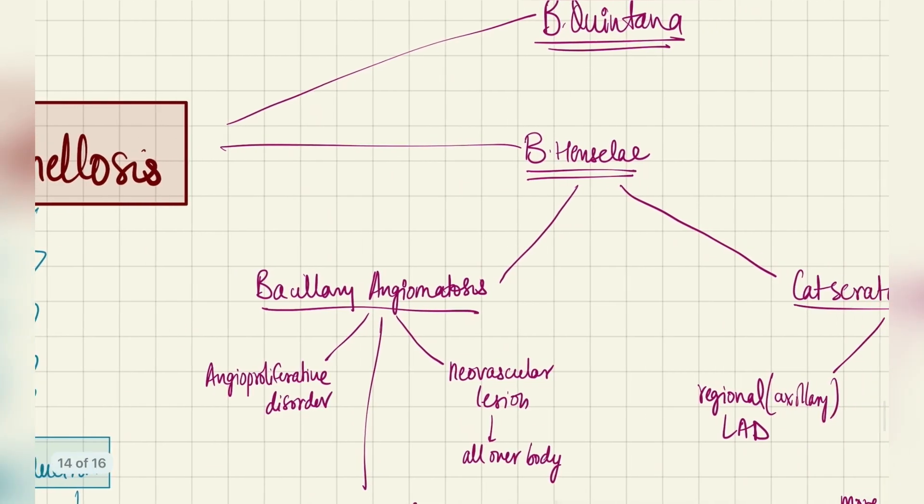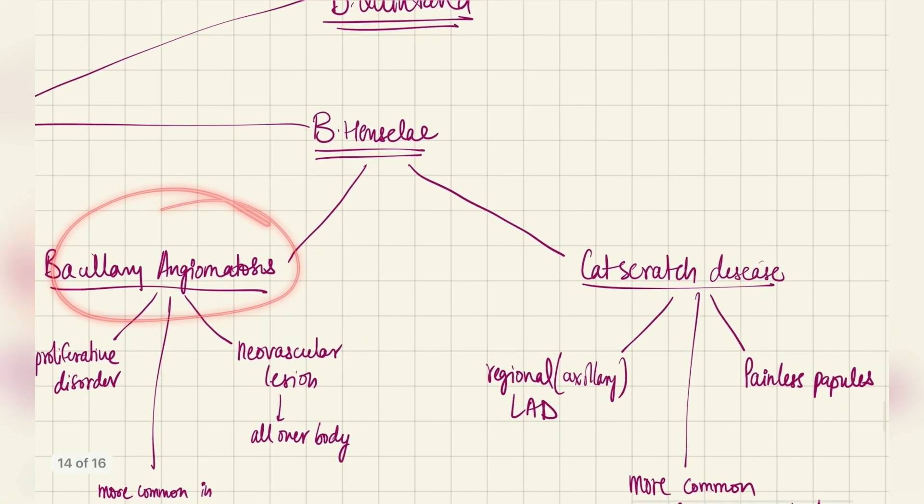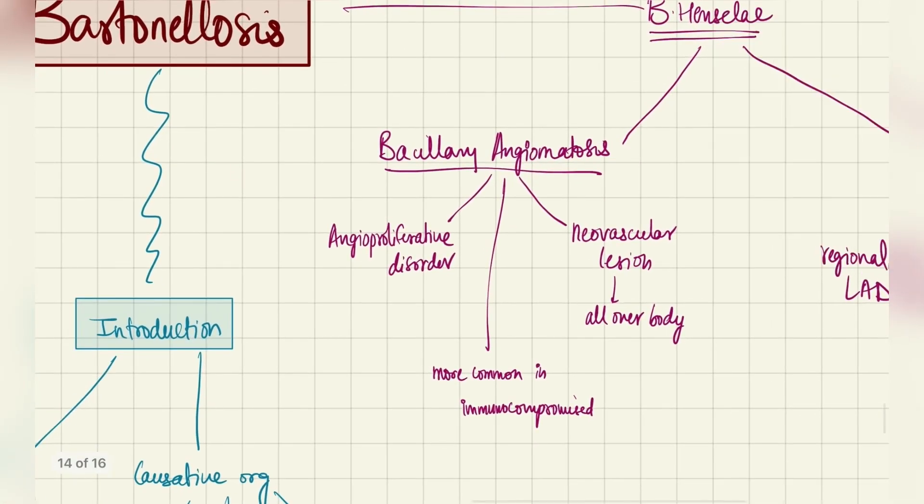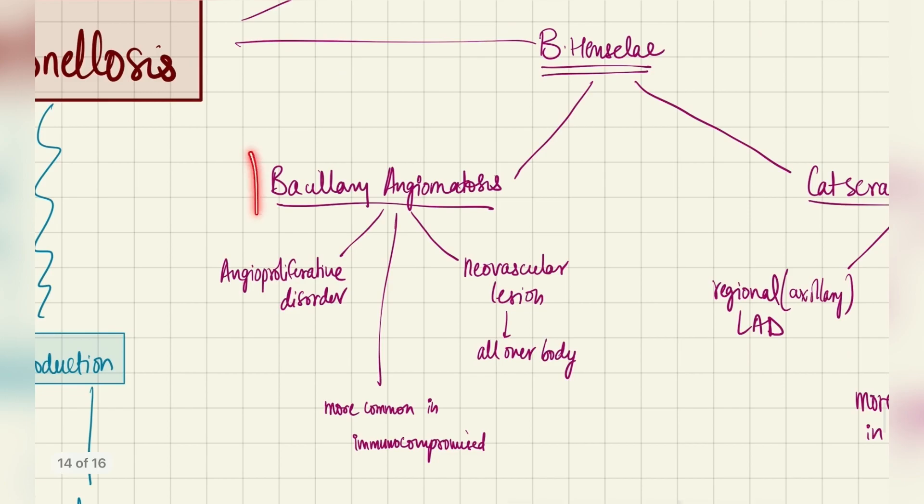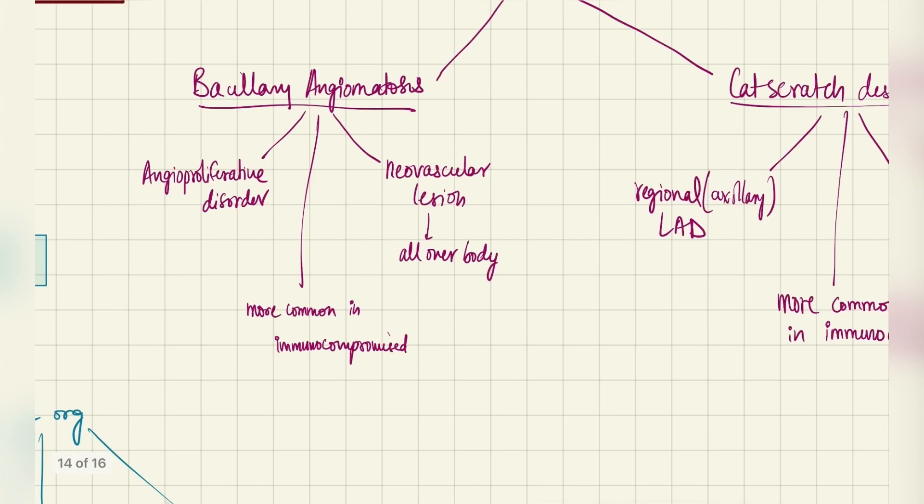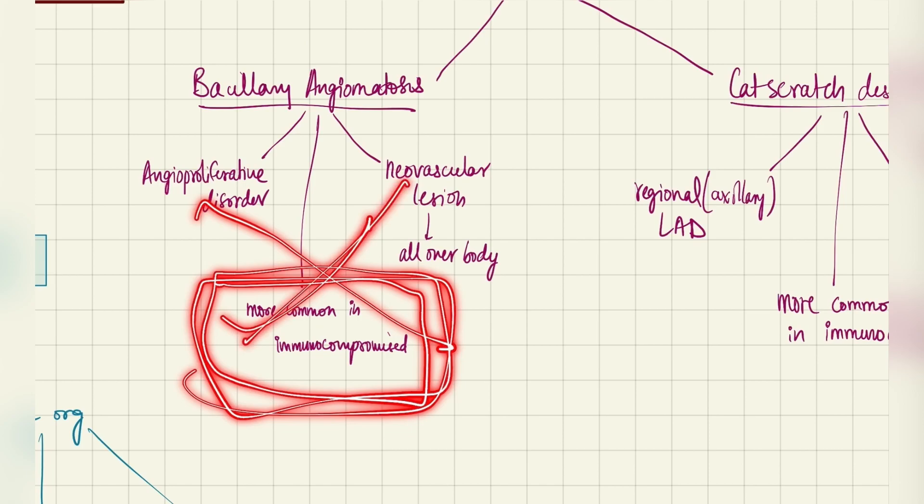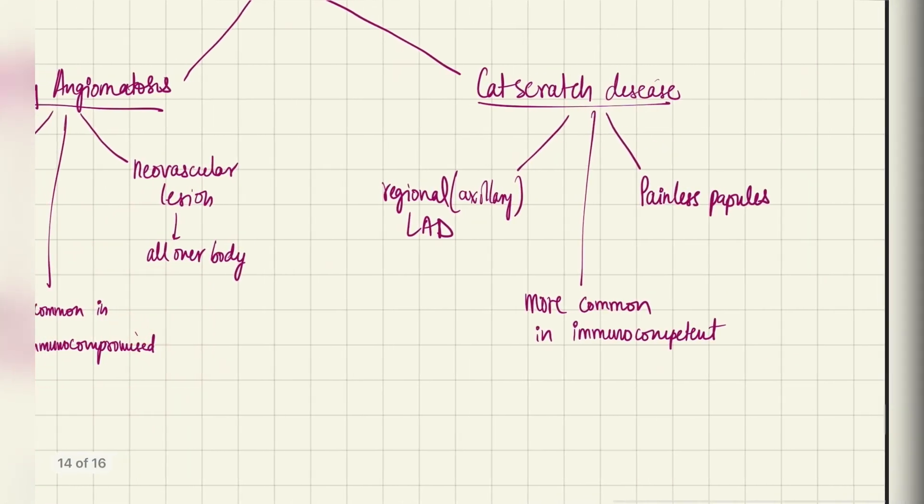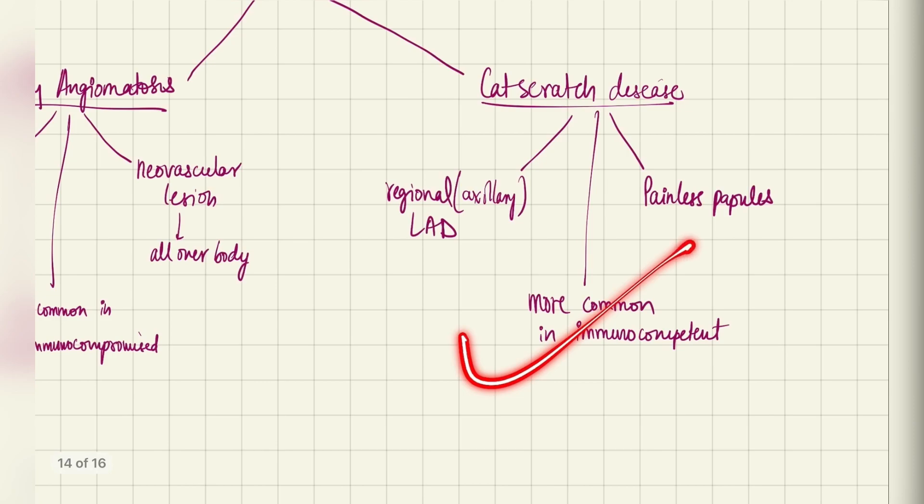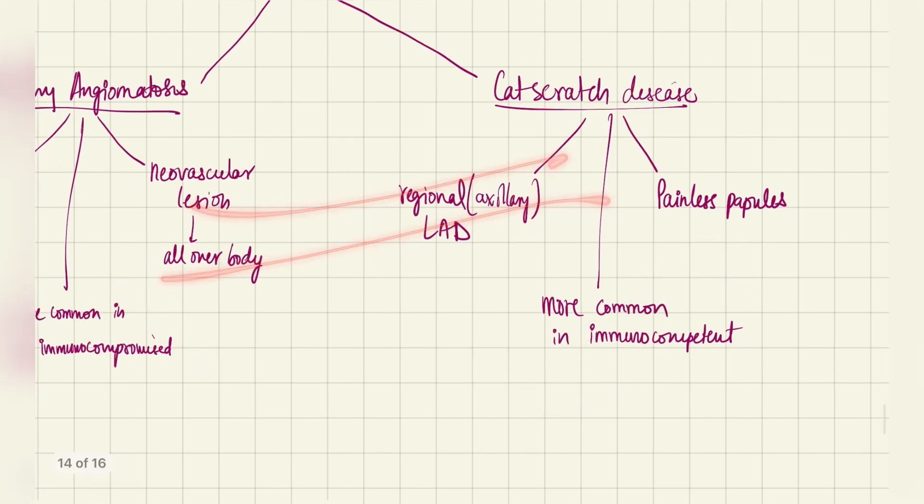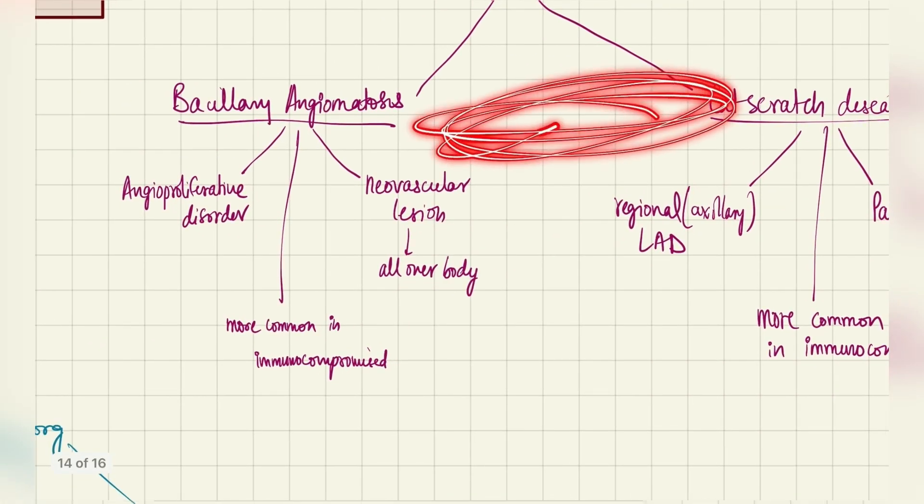Coming to Bartonella henselae which causes bacillary angiomatosis and cat scratch disease, let's look at the difference and the manifestations. Bacillary angiomatosis, the main difference, it will be caused in immunocompromised people. While cat scratch disease will be caused in immunocompetent people. Immunocompetent, immunocompromised. This is the only and main difference between both these diseases apart from the manifestations.